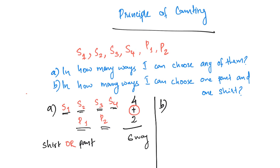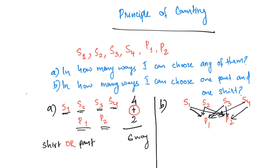Now the second question: in how many ways can I choose one shirt and one pant? I have S1, S2, S3, S4 and P1, P2. If I choose S1, I can pair it with P1 or P2. Same for S2, S3, and S4 — each can be paired with P1 or P2. I can choose one shirt in 4 ways and one pant in 2 ways.